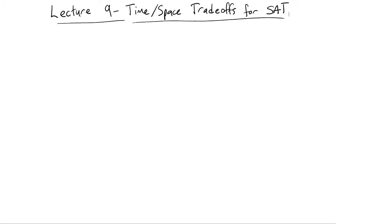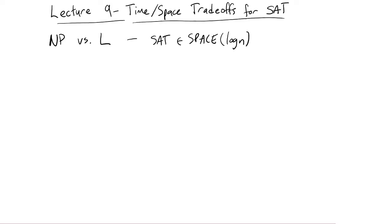The P versus NP problem is very hard to resolve — we don't expect to do so anytime soon. What about something maybe a little bit simpler, like NP versus L, logarithmic space? This is super unlikely to be equal. It's equivalent to the question of whether or not the SAT problem is solvable in log n space. Since this is even more unlikely than SAT equals P, hopefully we have a better chance of proving it. This is still hard, but let's see if we can prove anything along these lines.